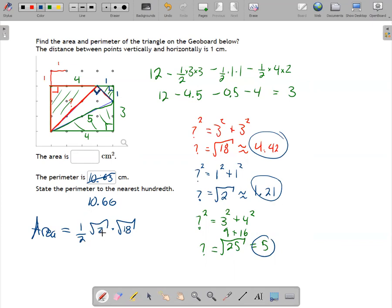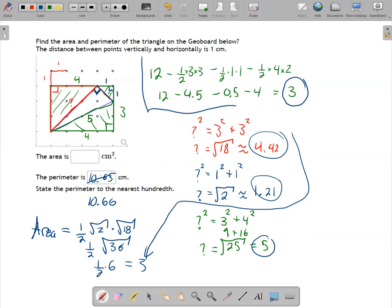So this actually works out nice. Square root of 2 times the square root of 18 is the square root of 2 times 18, which is 36. 36 is a perfect square. It's the square of 6. So the square root of 36 is 6, and half of 6 is 3, which matches the answer we got the other way. But I think this is a way harder route to get there than what we did originally for the area.